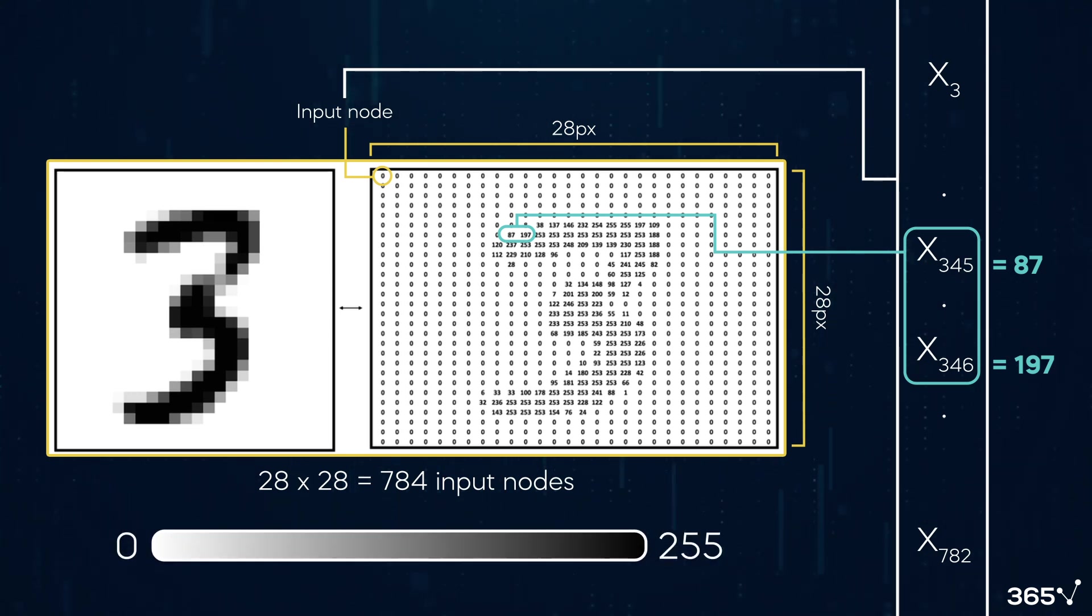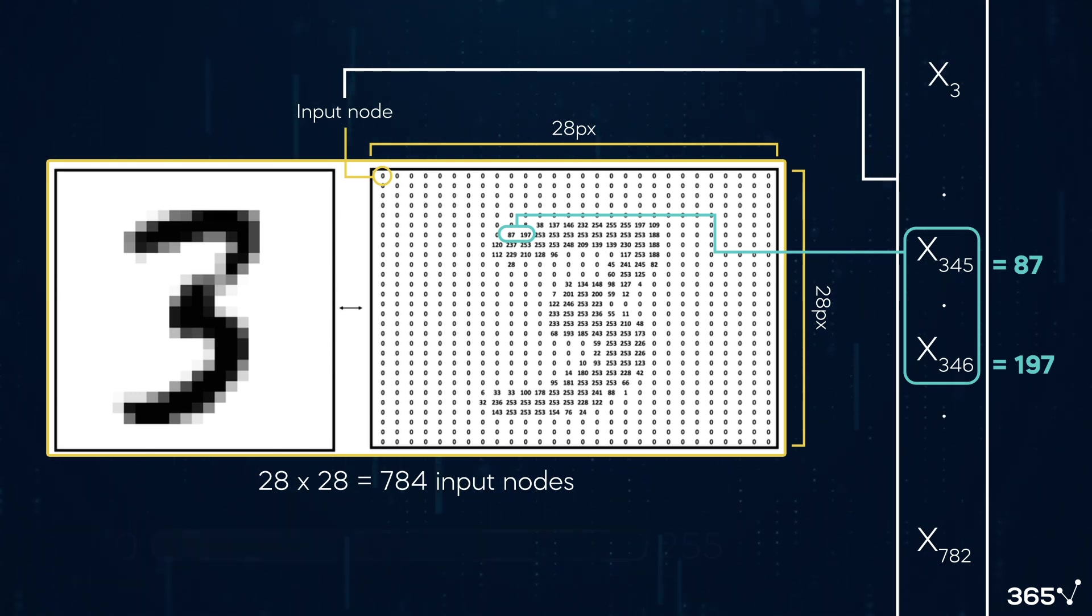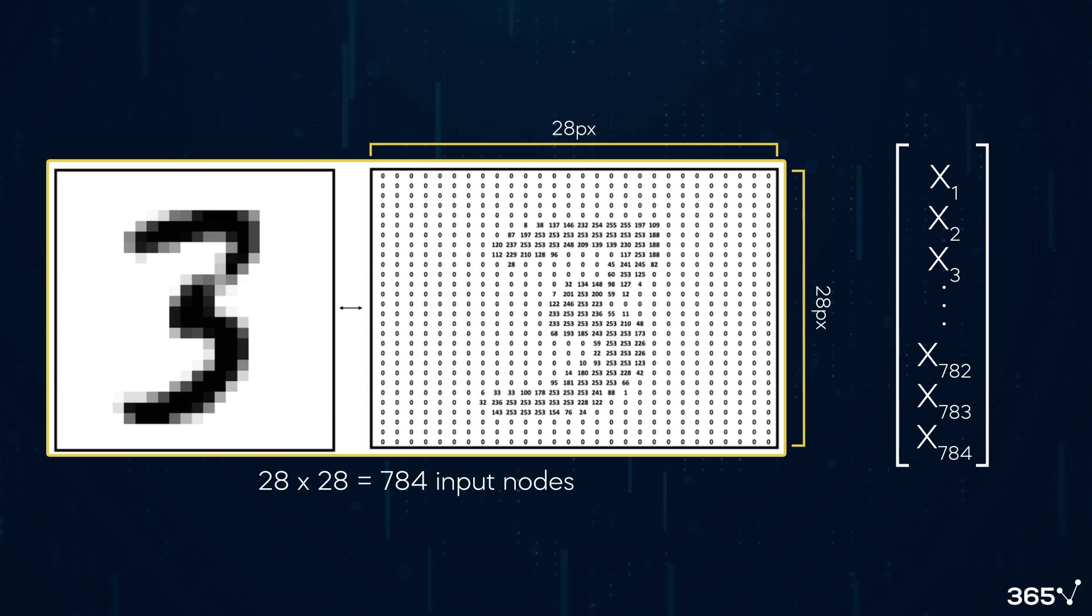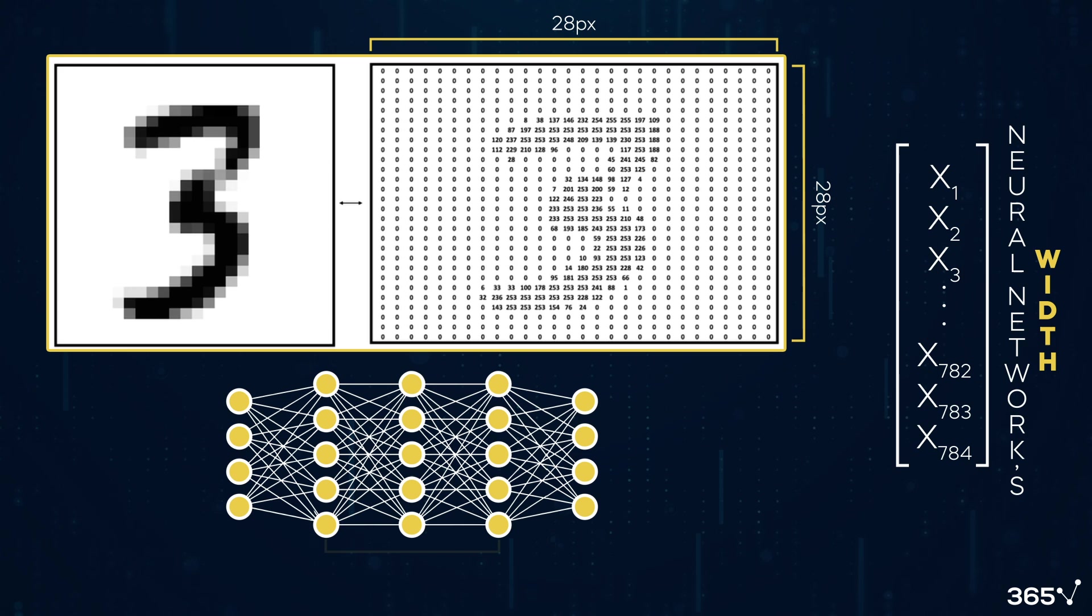The higher the number, the darker the content inside a given node. We describe the 784 input nodes in the input layer as the neural net's width and its number of layers as its depth.